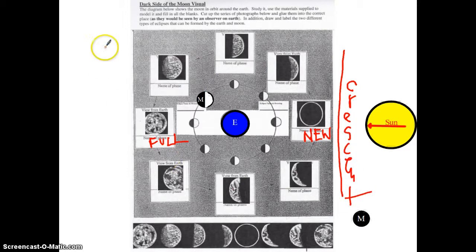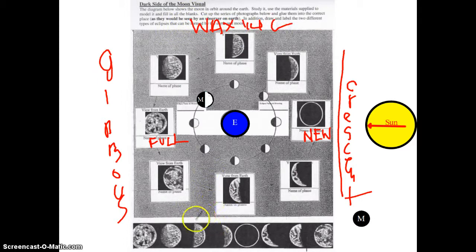So again, when we're naming these, everything over here, everything on this side, up and down, will be waxing, and over here, will be waning. Everything up here is gibbous, and everything down here is crescent. So new moon, full moon, first quarter, third quarter, waxing crescent, waxing gibbous, waning crescent, waning gibbous. And that is a moon.